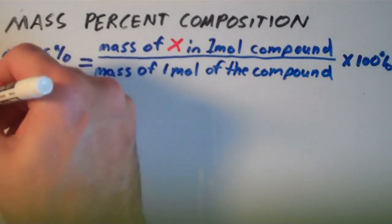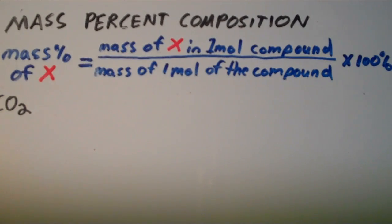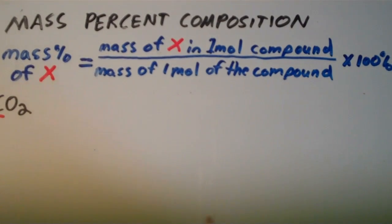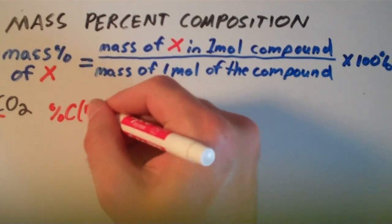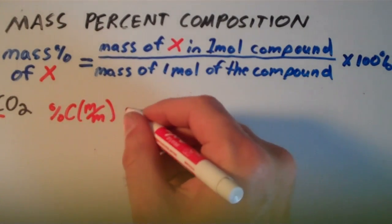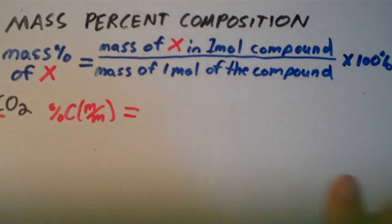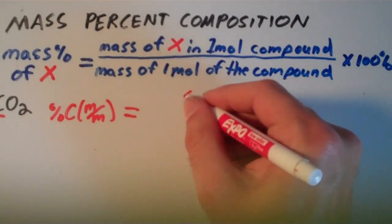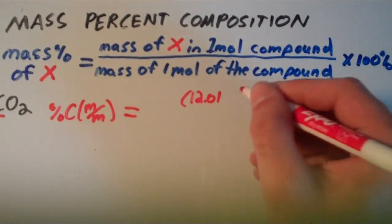Suppose I have CO2 and I want to determine the mass percent of carbon in CO2. The percent carbon by mass — also called mass-to-mass percent, which is just another way of expressing mass percent composition — is equal to the mass of carbon in one mole of the compound. From the periodic table, the molar mass of carbon is 12.01 grams per mole.